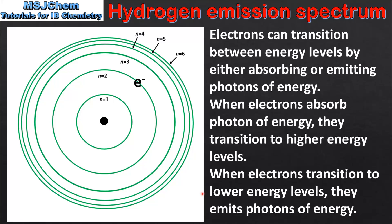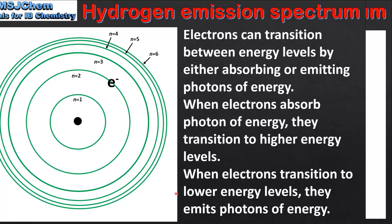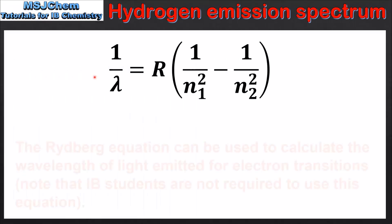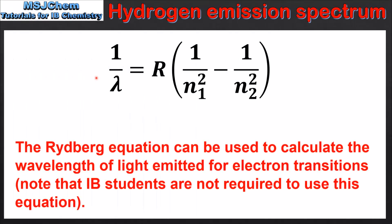Next we look at the relationship between these electron transitions and the wavelengths of light that are emitted. We'll use the Rydberg equation, which we can see here. In this example we'll calculate the wavelength of light emitted when an electron transitions from n equals 3 to n equals 2.